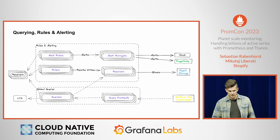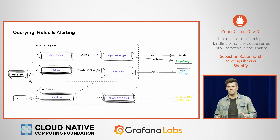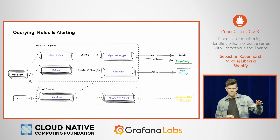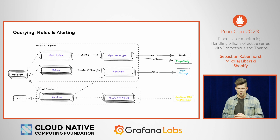Now, how do we use those metrics to run rules, alerting, and queries? Rules and alerts are evaluated by running global queries against all regional queries. They send alerts to Alert Manager, and Alert Manager can send them to Slack, PagerDuty, and so on. Rulers also query the regional receivers and write the result of the rule evaluation into another set of receivers which work as regional receivers. It uploads blocks to object store, but it can also be queried by the user directly.